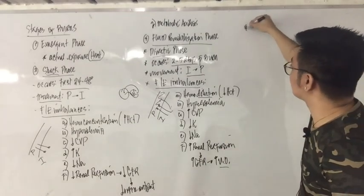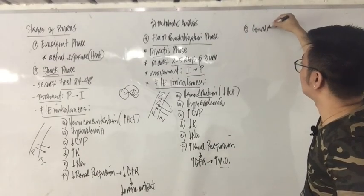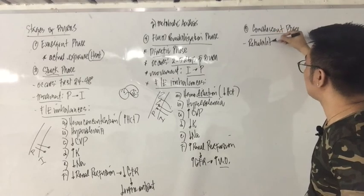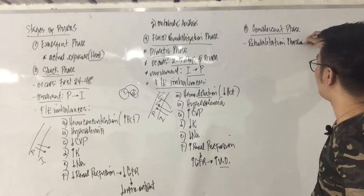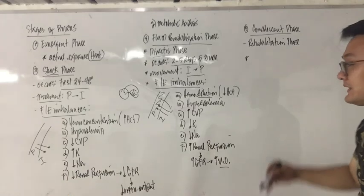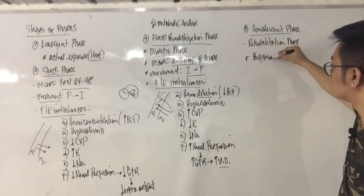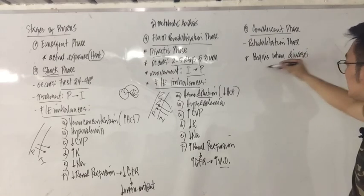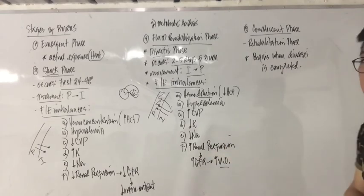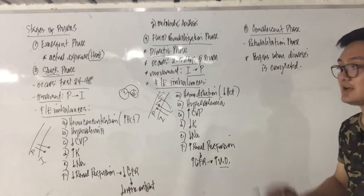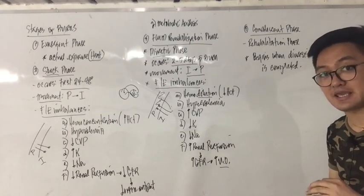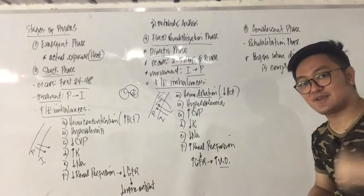The last stage of burn injury is the convalescent phase — other books call it the rehabilitation phase. This begins immediately once diuresis is completed. These are the different stages of burn injury and their fluid and electrolyte imbalances. We'll proceed to part three of burn injury in the next video clip.